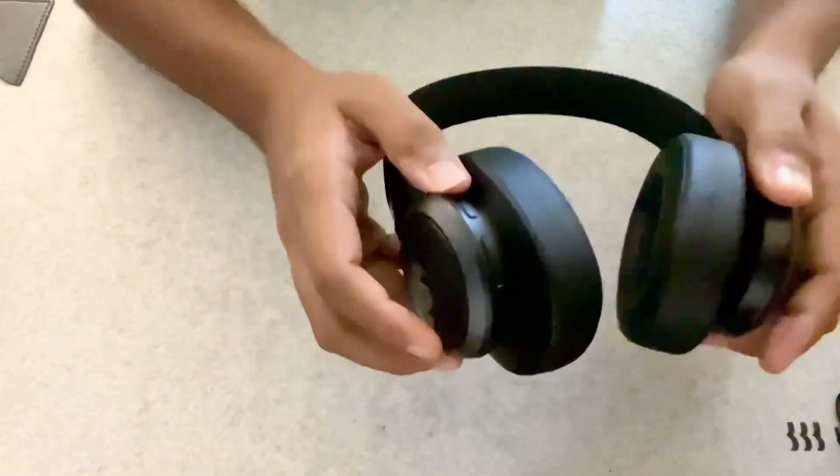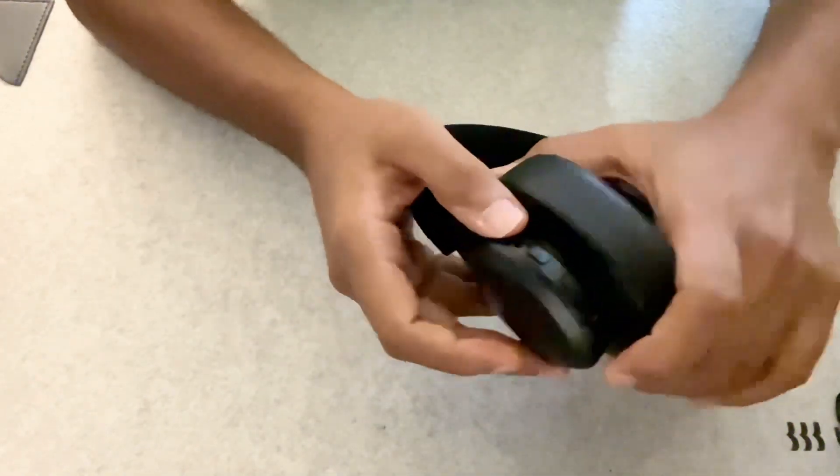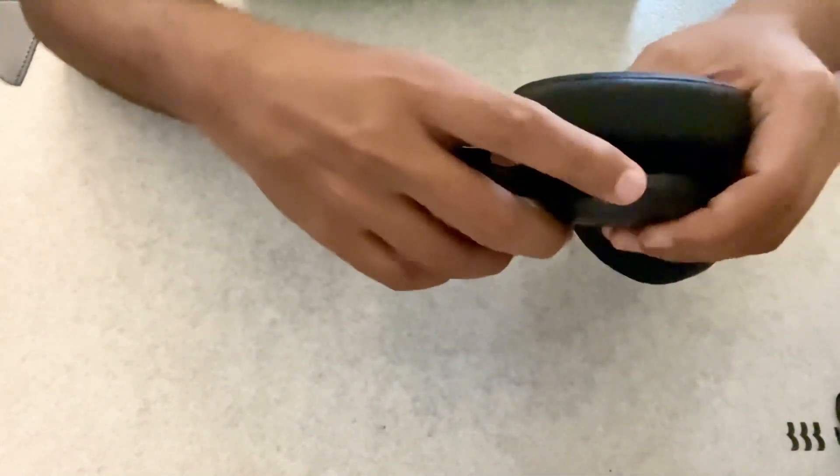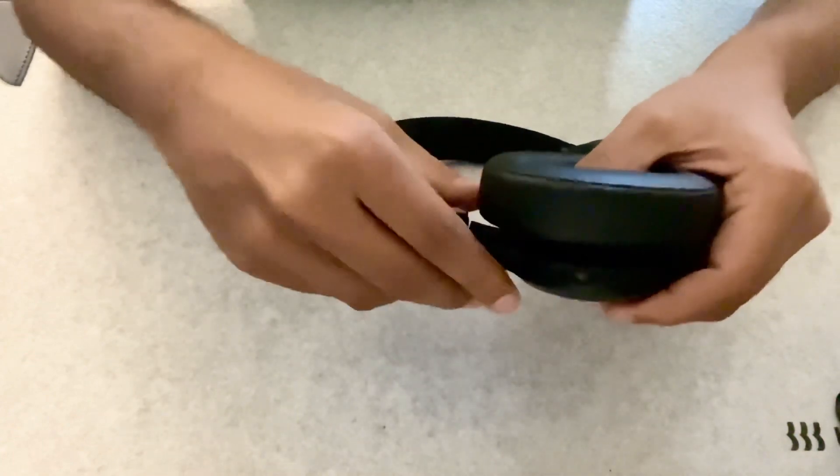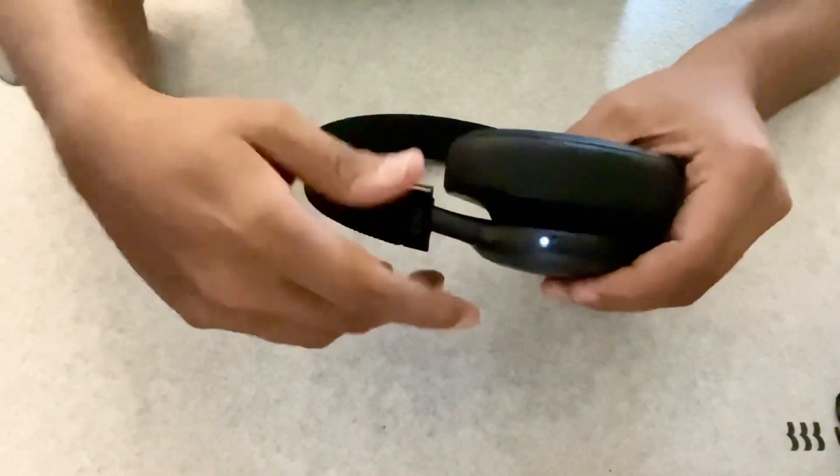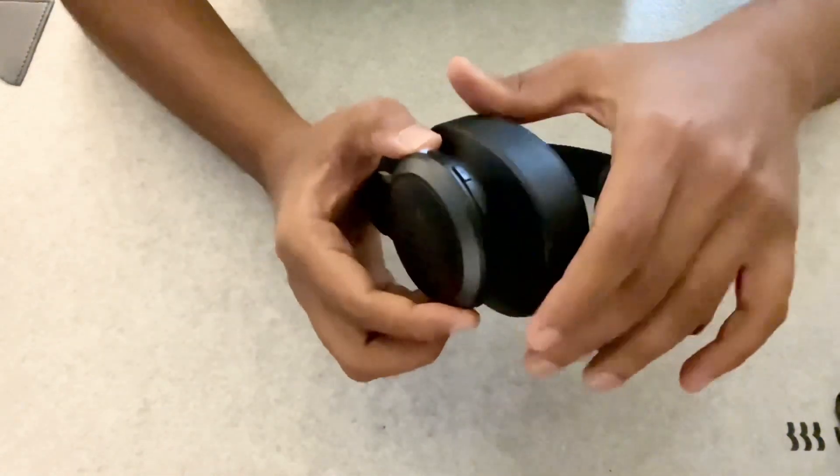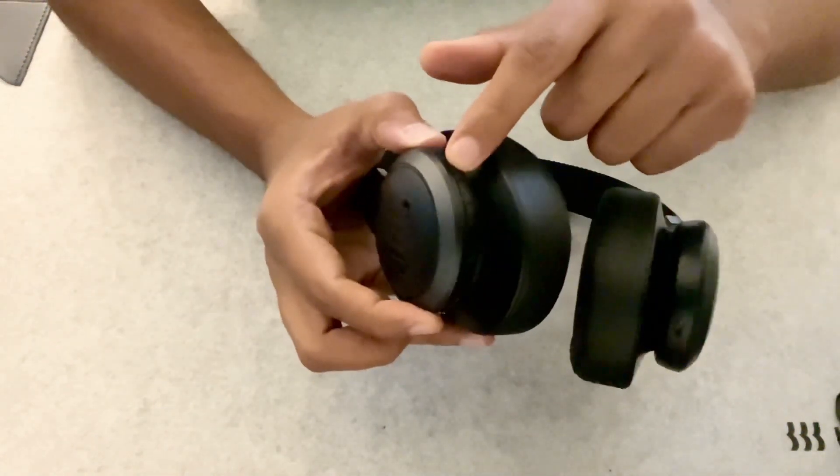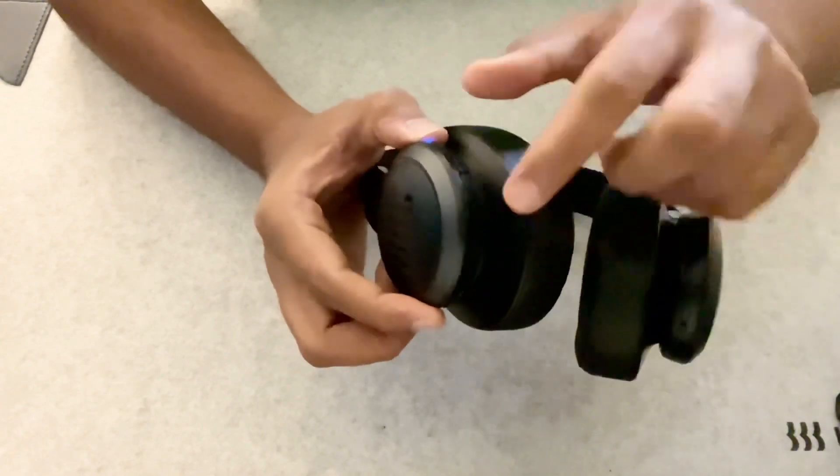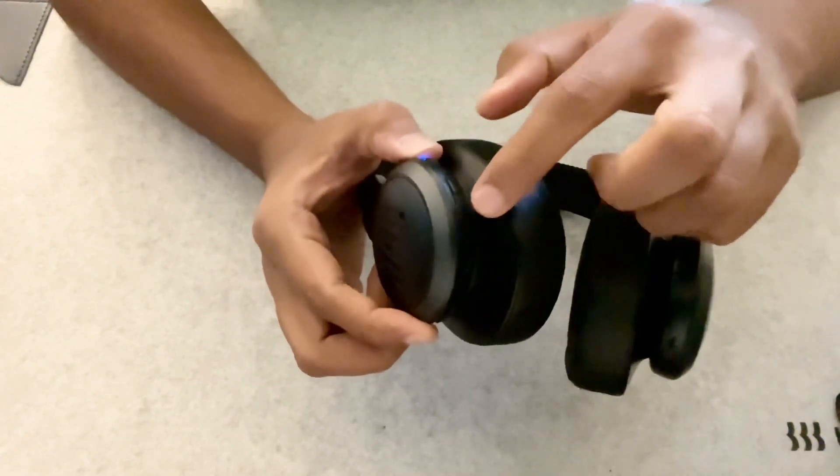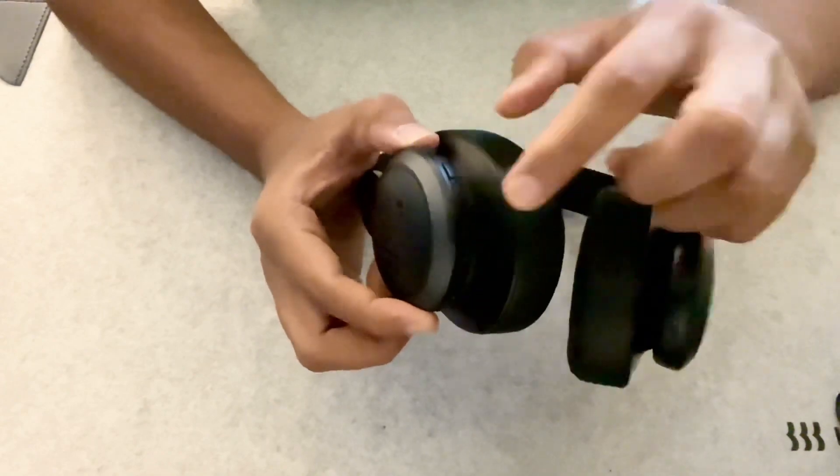Now let's take a look at the side. Here we have our regular power button, so you slide this up and it turns on with a little bit of opening sound. Then we have the volume buttons over here—this is to increase the volume, this is to decrease the volume, and this is to pause your soundtrack.